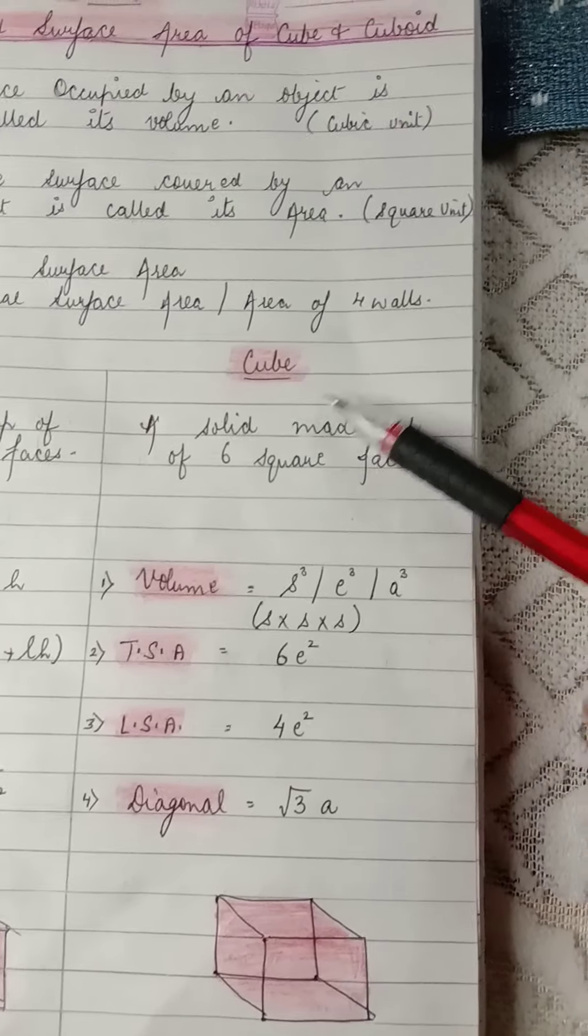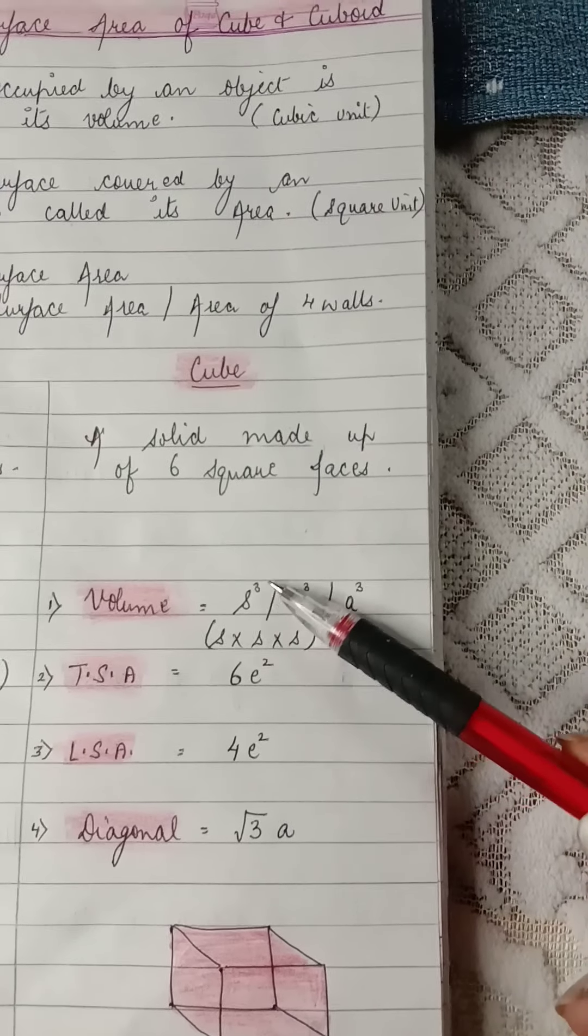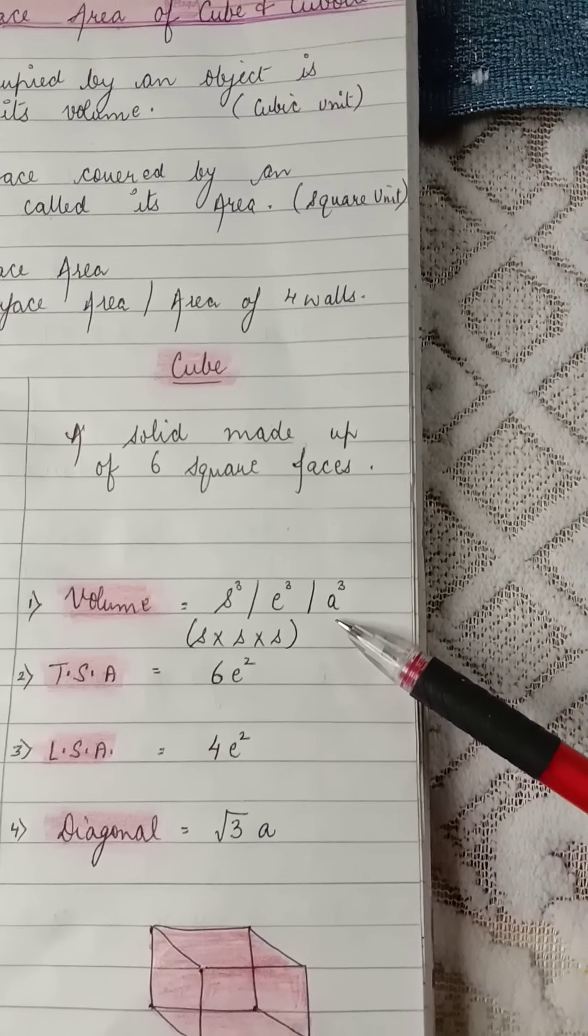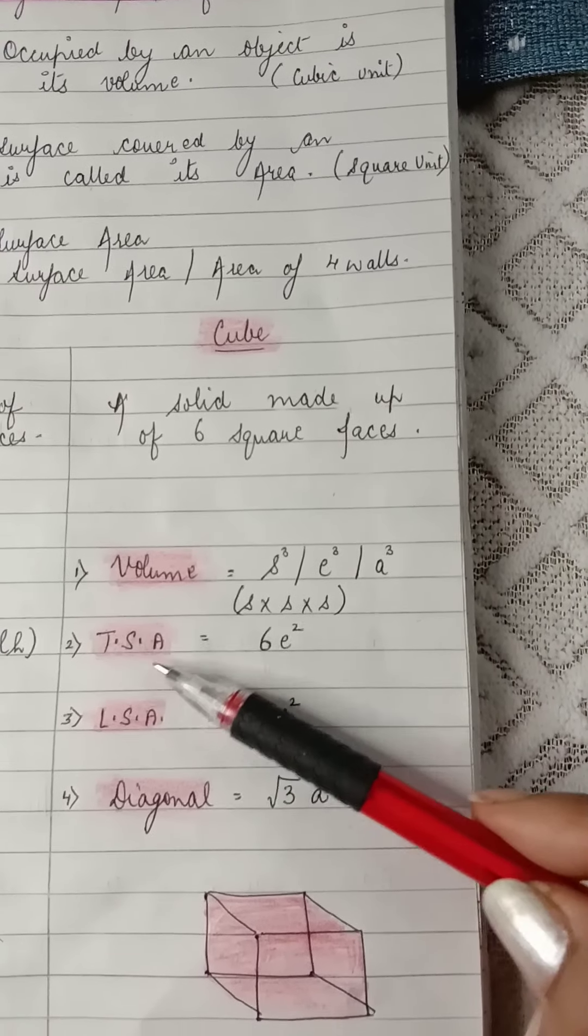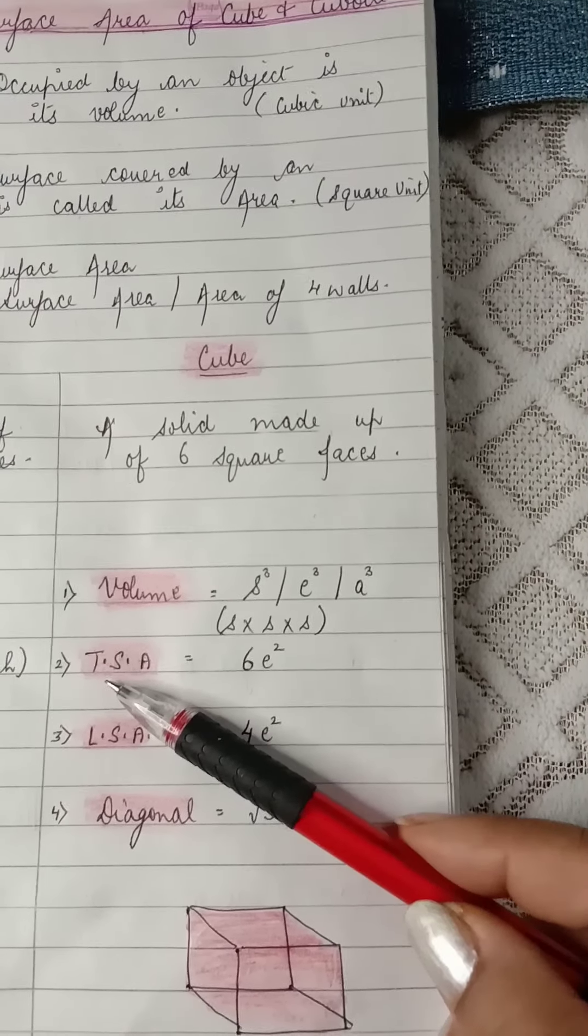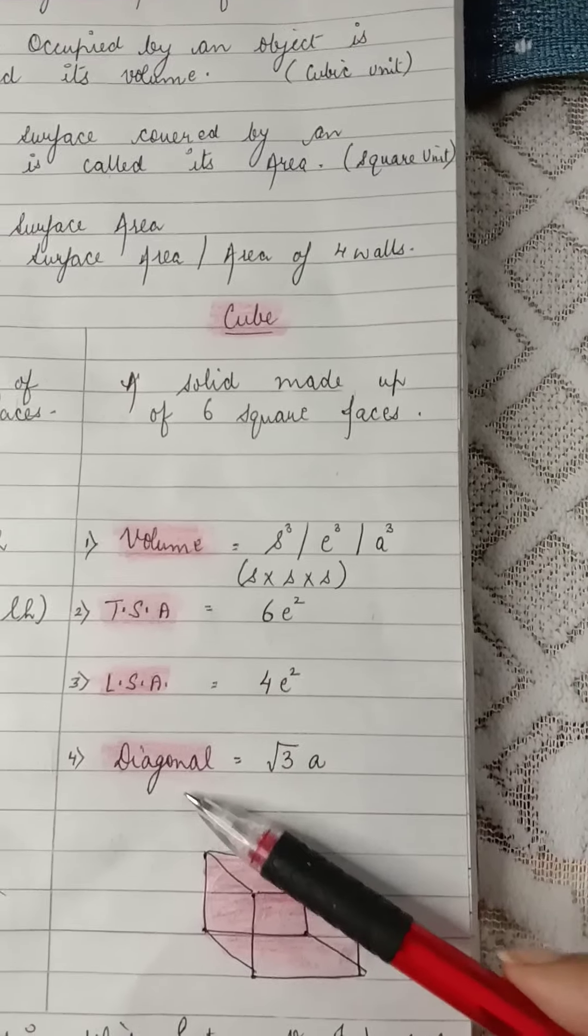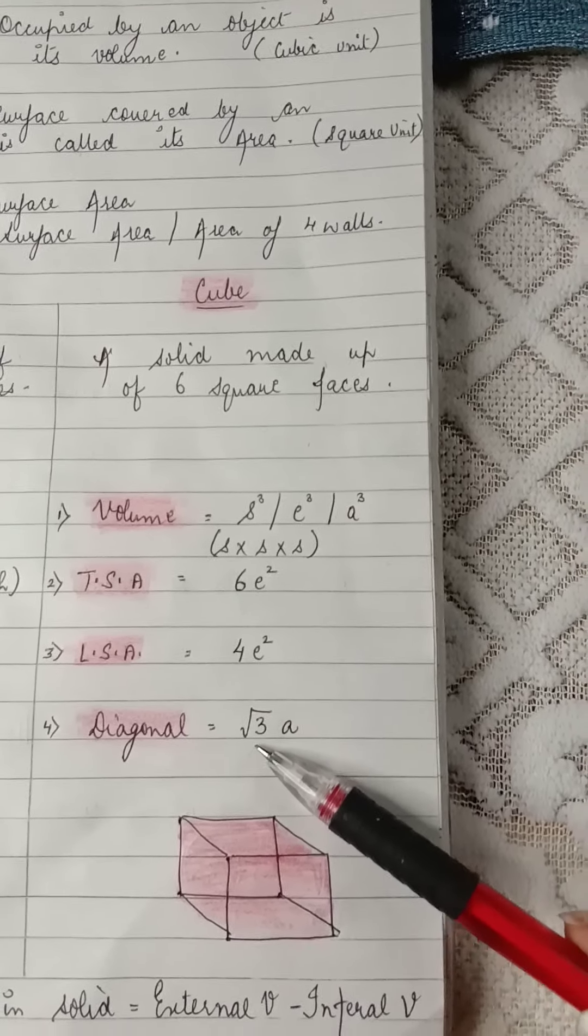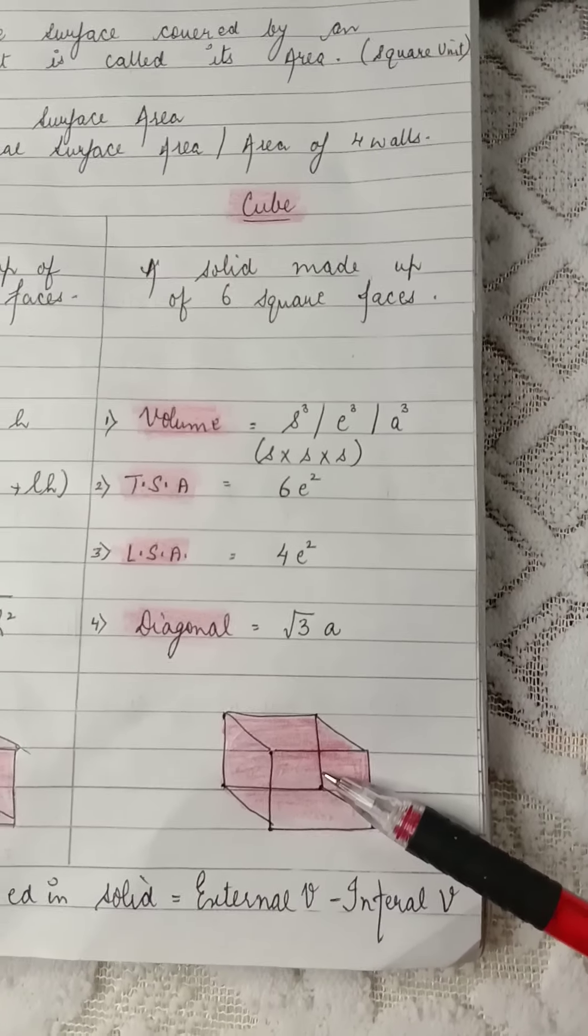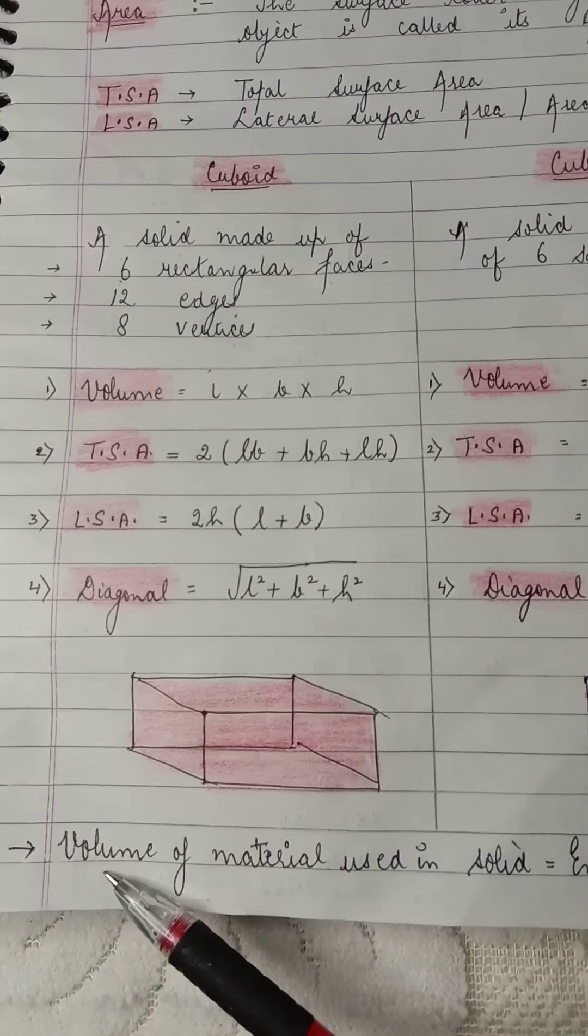Now moving on to the formulas of cube. Volume of cube is S cube, that's side cube, which can also be written as E, that's edge cube, or A cube, which is again a term used for side cube. Means multiplying it by itself three times. TSA: 6E square. LSA: 4E square. And diagonal is under root 3A, or you can write as under root 3S, under root 3E. Again, that's what a cube looks like.